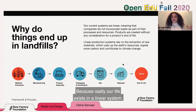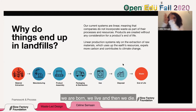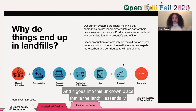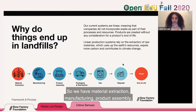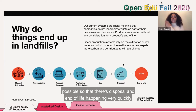The linear system goes: material extraction, manufacturing, product assembly, packaging and distribution. We have oftentimes designed the usage part to be as small as possible, so that disposal and end of life happen very quickly after we've adopted the product. The reason why the timeframe for usage and disposal is so short is because for the economic model to be prosperous — for capitalism to exist — we need to redo this whole loop back again as fast as possible, as often as possible.